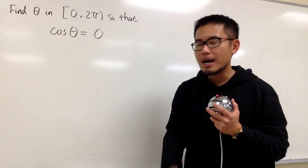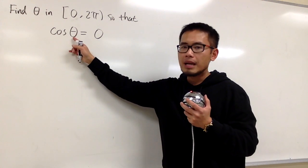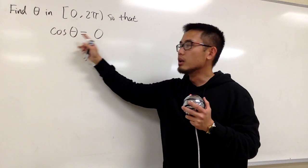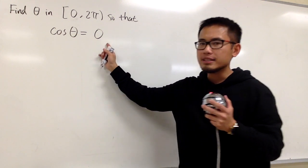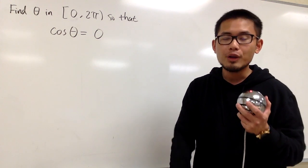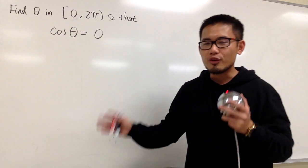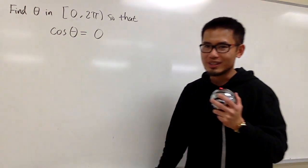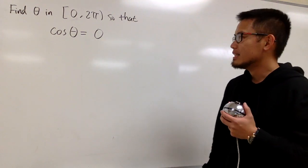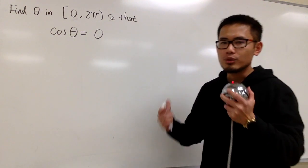Keep in mind, whenever you have cosine θ by itself and the right-hand side is equal to 0, 1, or negative 1, you know the reference triangle wouldn't work. So you have to utilize the idea of the unit circle.